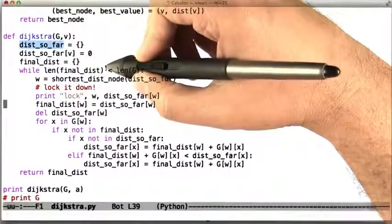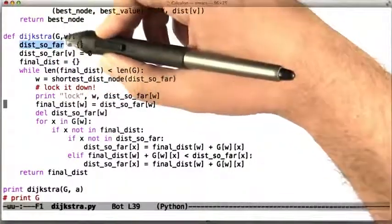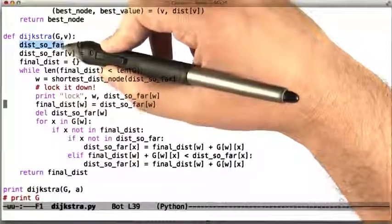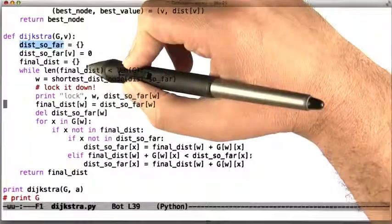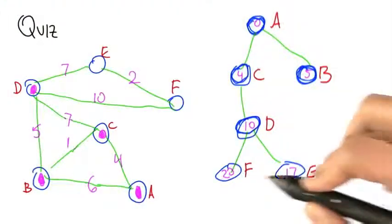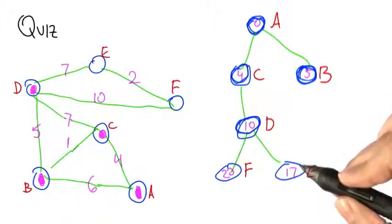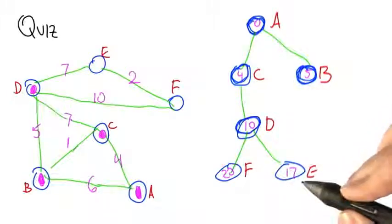The distance so far is a structure that's going to represent a mapping from nodes to what we think the distance might be from V to that node. In our hand-simulated algorithm, these are the numbers in the non-locked circles. Some nodes might not have any numbers yet, and the ones that have numbers are represented in that mapping.